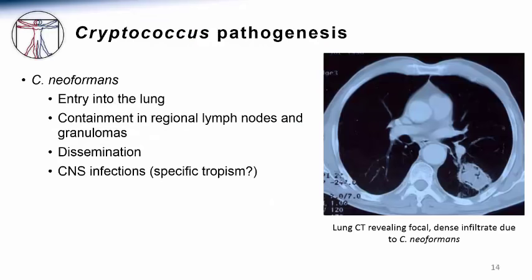This organism enters the lung by inhalation. Although it causes an initial subclinical lung infection, sometimes this can be more severe, as shown in the CT scan where a patient presented with nodular pneumonia due to Cryptococcus neoformans. However, this is very rare. In most patients the infection is isolated in regional lymph nodes and granulomas throughout the lung. In certain immunocompromised patients, the organism can disseminate from this primary site and has a special predisposition for going to the central nervous system.